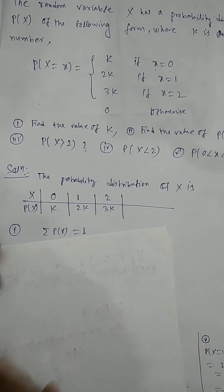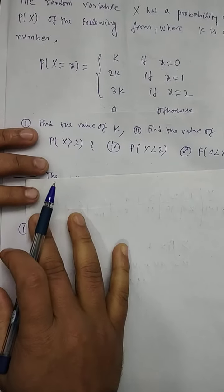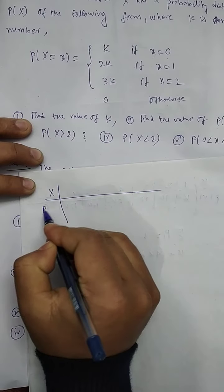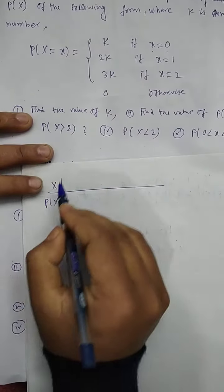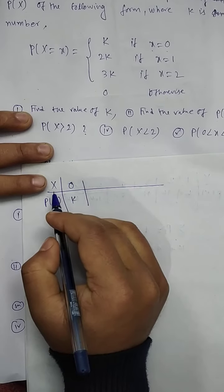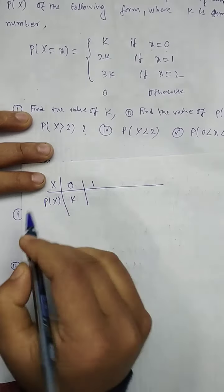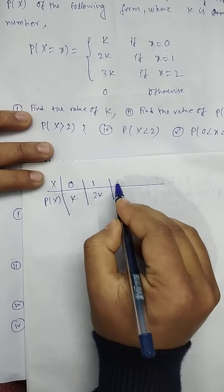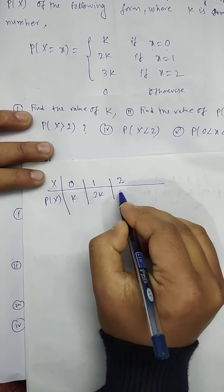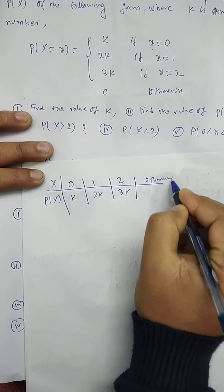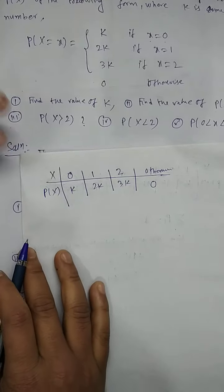Now, the probability distribution of X is: when X = 0, P(X) = K; when X = 1, P(X) = 2K; when X = 2, P(X) = 3K; otherwise 0.